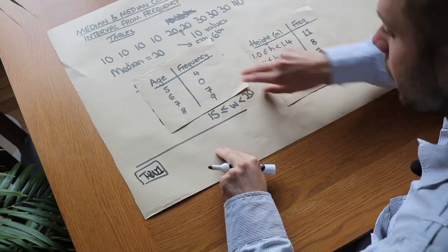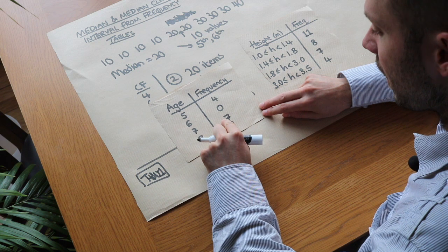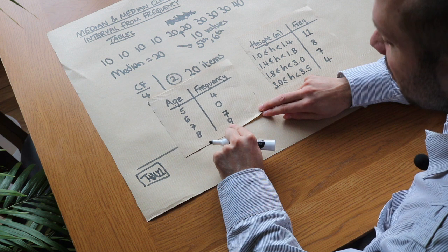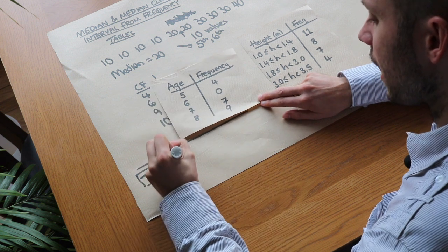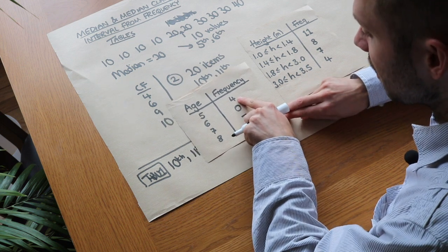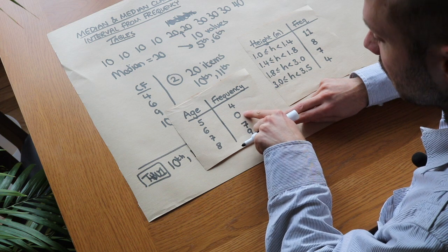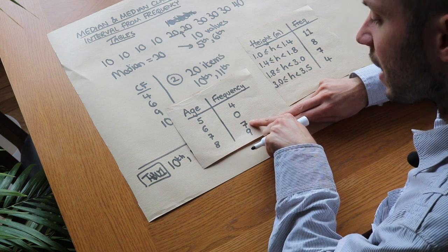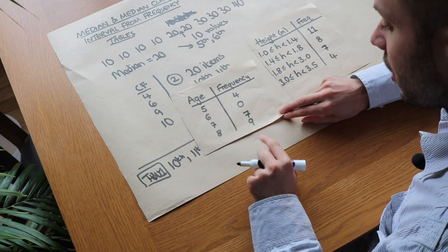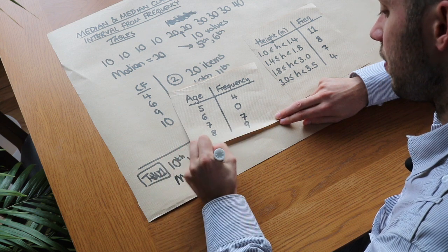Let's do the first one. The total is 4 + 7 + 9 = 20, so we halve that to get 10. We want somewhere between the tenth and eleventh items. Does it occur within the first four items? No. But does it occur within the first eleven items? Four plus seven is eleven — yes it does. So the median age is equal to 7.